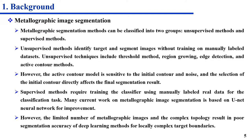At present, many researchers carry out research based on this model. However, the model is sensitive to the initial contour and noise, and the selection of the initial contour directly affects the final segmentation results. Supervised models require training the classifier using manually labeled real data. Many current works on metallographic image segmentation are based on the U-Net neural network for improvement. Although this model performs well in the field of metallographic segmentation, the limited number of metallographic images and complex topology structure lead to poor segmentation accuracy at local complex target boundaries and segmentation of small targets.